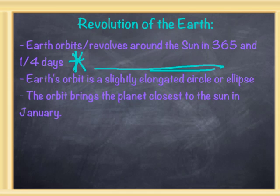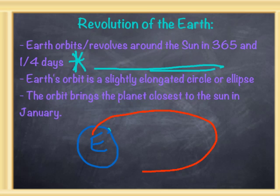Earth's orbit is a slightly elongated circle, or an ellipse. Our Earth is right here, and the path in which it follows looks something like this — it's not a perfect circle, it's almost like an oval shape. Now that oval shape, or that orbit, brings the planet closest to the Sun in January. That may not make any sense because it's really cold here in January, but there's another reason for that which we're going to get into.